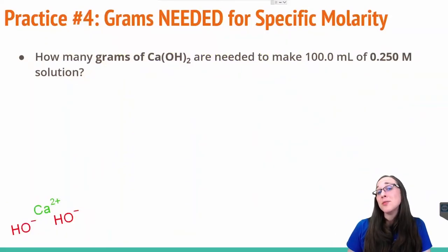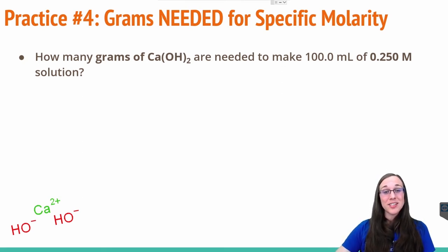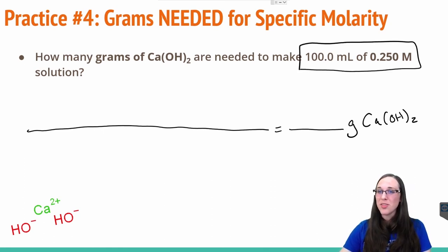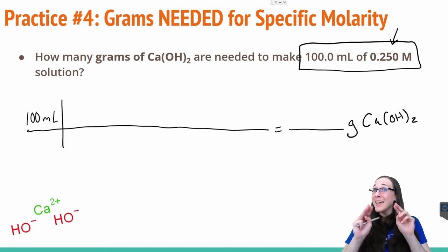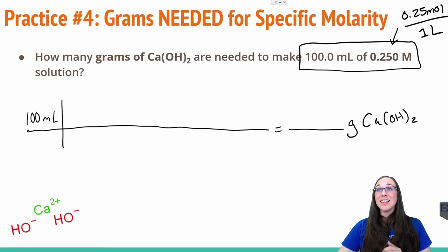What if you need to know how many grams you need for a specific molarity? This question asks: how many grams of calcium hydroxide would be needed to make 100 milliliters of a 0.25 molar solution? We're going to need our magical line to freedom. Our goal is grams of calcium hydroxide. Since we're given both a volume and a molarity, we start with the one that only has one unit — the 100 milliliters. We also know that 0.25 M means 0.25 moles per one liter, and the liter won't cancel with milliliter, so we need to convert first.